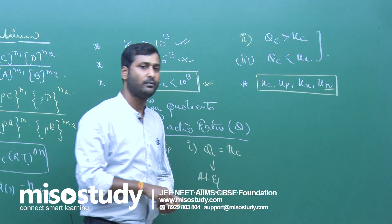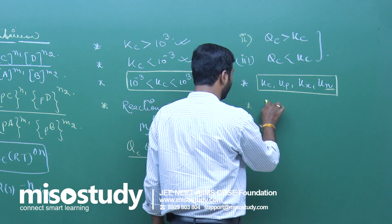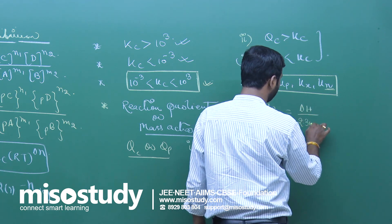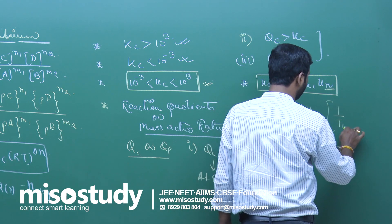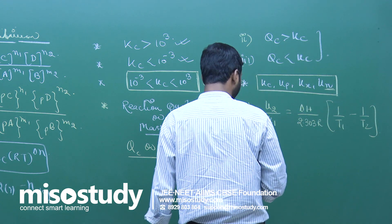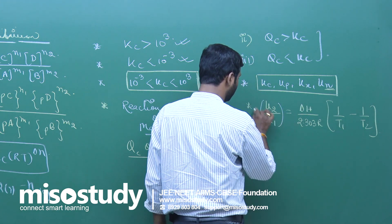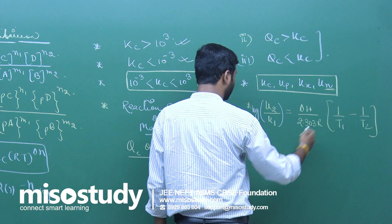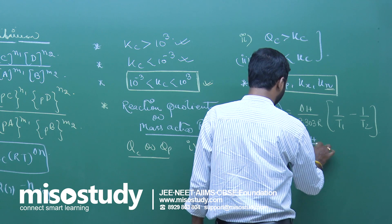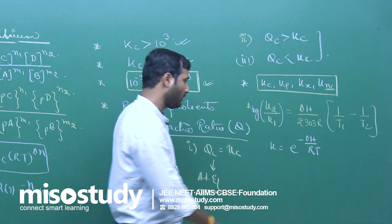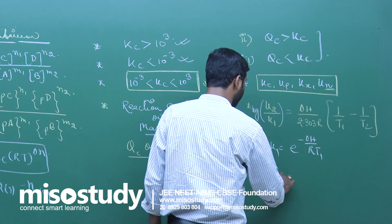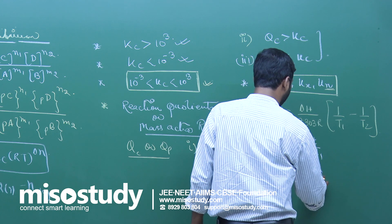For the variation of equilibrium constant with temperature, we have the equation: log(K2/K1) equals delta H upon 2.303R times (1/T1 minus 1/T2). The general expression comes from K equals e^(−ΔH/RT), so ln K1 equals −ΔH/RT1 and ln K2 equals −ΔH/RT2.